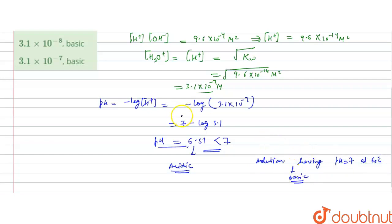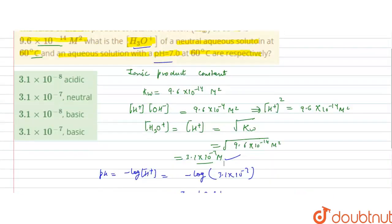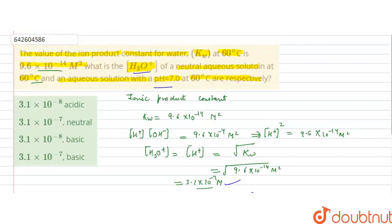The answer: the concentration of H₃O⁺ is 3.1 into 10 to the power minus 7 molar, and the solution having pH 7 at 60 degrees Celsius is basic. So the correct answer is option D. I hope you understood the solution. Thank you.